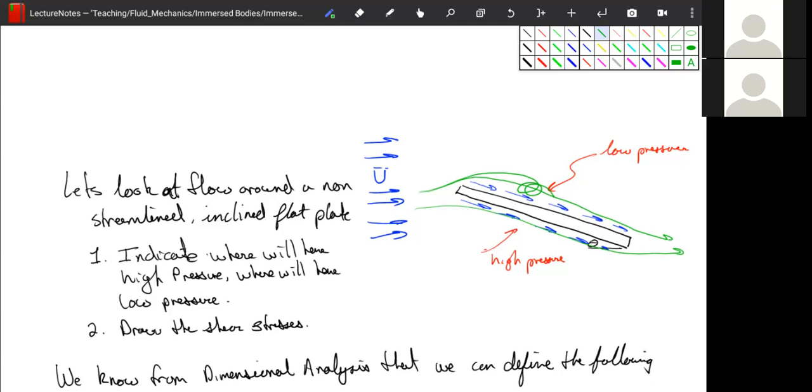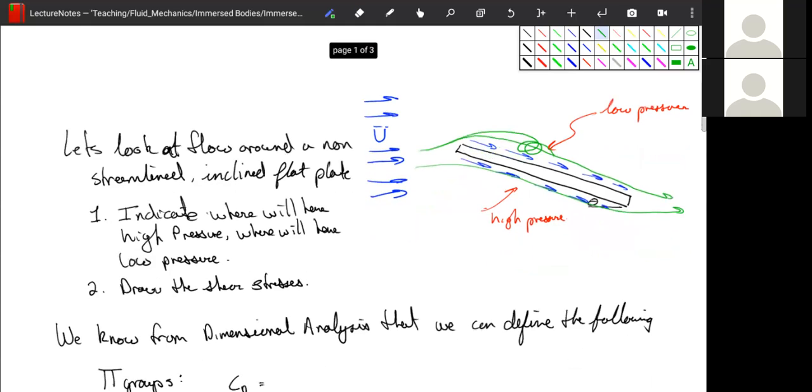But right now, as we've drawn it, this object has net lift because it has low pressure on top and high pressure on the bottom. Basically, this is a paper airplane. So for every object, we can define this shear stress and this pressure distribution, and those combined will result in a lift and a drag.